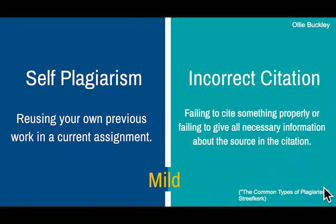The least severe types of plagiarism are still taken very seriously. Self-plagiarism is using your own work from a previous assignment in a current one without permission — for example, using a paragraph written in 9th grade on an assignment in 11th grade, or using work from one class in another in the same year. Lastly, incorrect citation is a very common type that can be accidentally committed — all it takes is failing to cite a source or not including all necessary information in a citation.